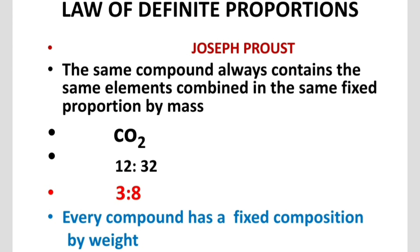A compound always has a fixed composition by weight, irrespective of the source. A given compound always contains the same elements in the same proportion. For water (H₂O), the elements are hydrogen and oxygen. Hydrogen mass is 2, oxygen is 16, giving a ratio of 2:16, which simplifies to 1:8.